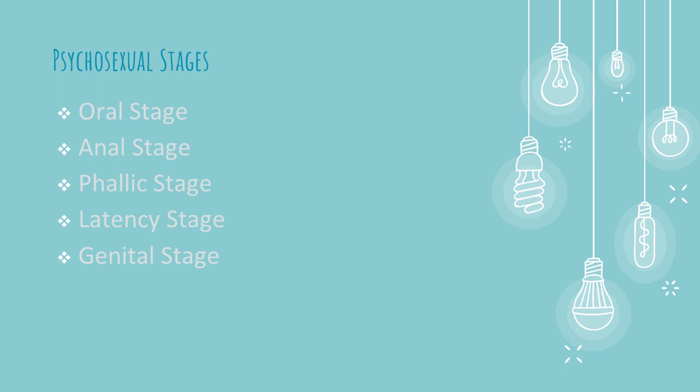The next stage is the anal stage, which is from two to three years of age. Its main focus is on the anal area, and the main task of this stage is toilet training.